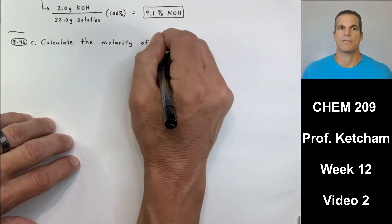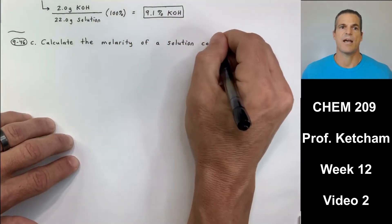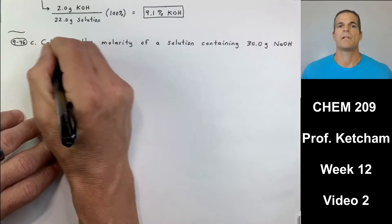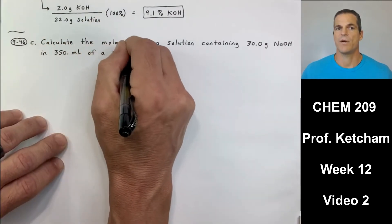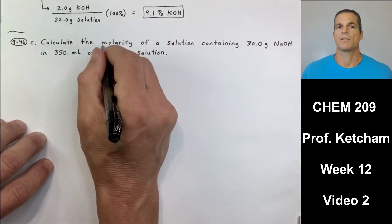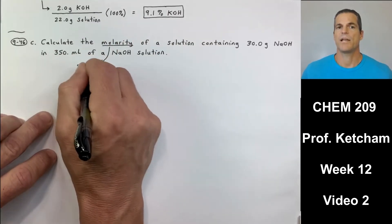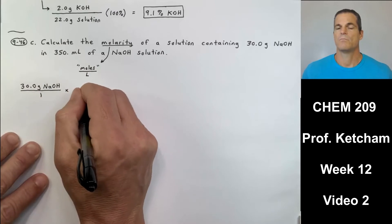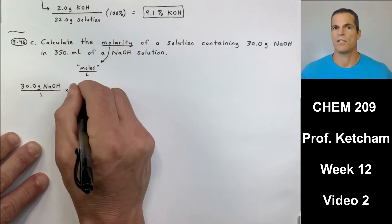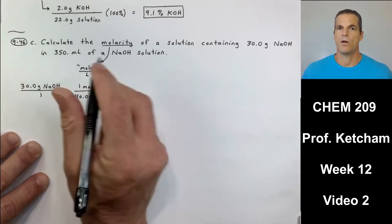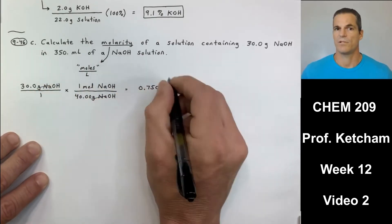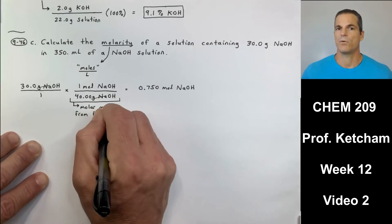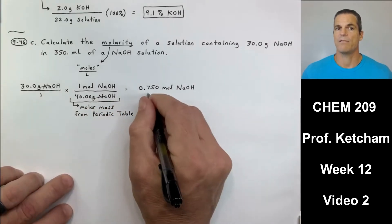Next problem, number 46. Looks like it's number 46C actually. It says calculate the molarity. Molarity is moles per liter. Calculate the molarity of a solution containing 30.0 grams of NaOH in 350 milliliters of an NaOH solution. Well, since molarity is moles per liter, the very first thing I need to do is convert grams of NaOH to moles of NaOH. I can do that in one step using the periodic table. If I add up NaOH, add them all together, it's 40.00. That 30.0 grams of NaOH divided by 40 gives me 0.75 moles of NaOH. That's going to be my numerator for moles per liter.